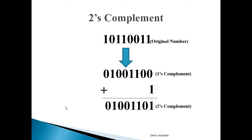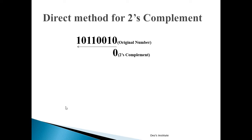There is another method to calculate the 2's complement of a number — we call it the direct method for 2's complement. By this method, you can directly get the 2's complement of a number.